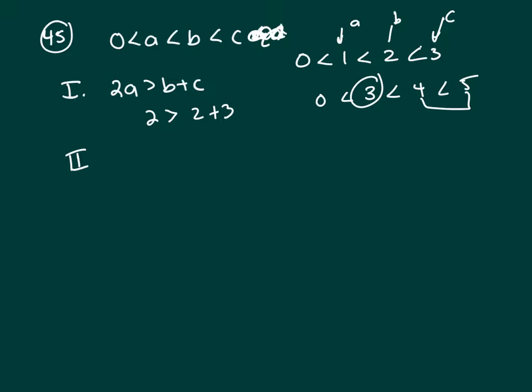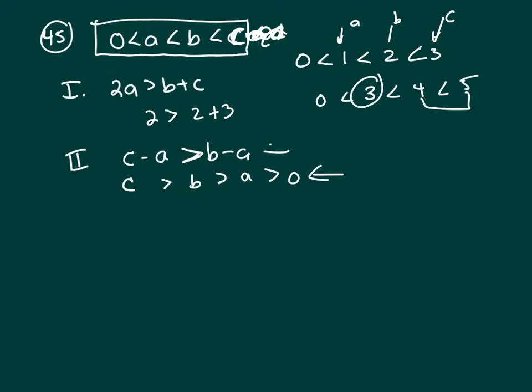Roman numeral II says what? c minus a is greater than b minus a. Well let's look at what's given. You see how it has less than signs? Let's switch it around to where it has greater than signs. So 0 is the smallest number in this inequality. c is the largest. That means c is greater than b is greater than a is greater than 0.